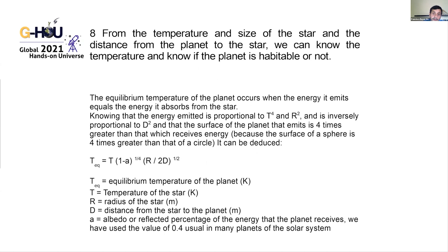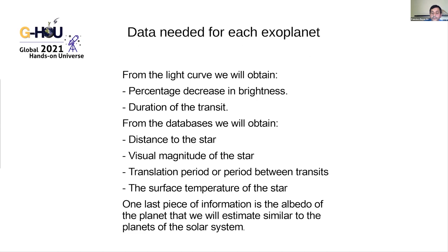With the temperature of the star and the distance from the planet to the star, we can calculate the temperature of the planet and determine if it is habitable or not. To do this, we calculate the equilibrium temperature, at which the energy emitted by the planet equals the energy received from the star. With these calculations, we know everything we need.